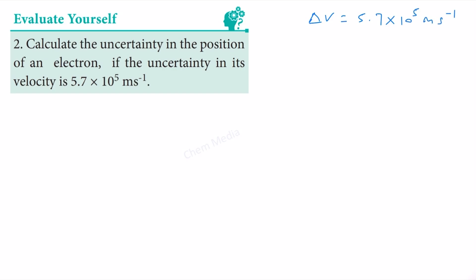We know from the Heisenberg uncertainty principle that accurately measuring both the position as well as momentum for a microscopic particle is not possible simultaneously. Let us say this is the nucleus and this is the electron. If you try to measure the position accurately, the velocity will be changing. If the velocity is changing, momentum will be changing because p is m times v. So if you try to measure the momentum accurately, then the position will be changing. Therefore, simultaneously measuring both position and momentum accurately is not possible as per the uncertainty principle.